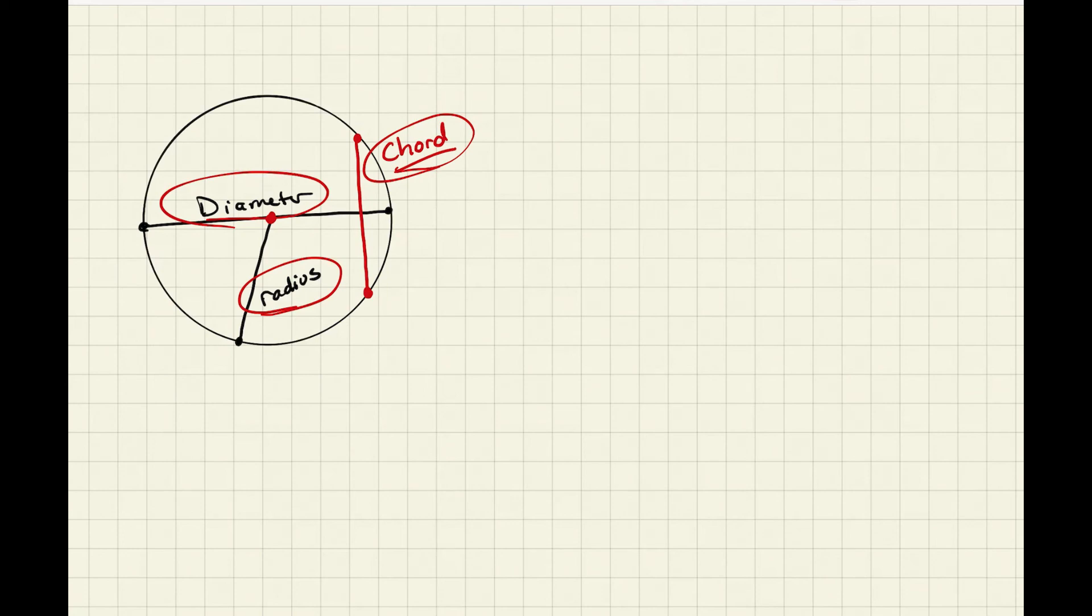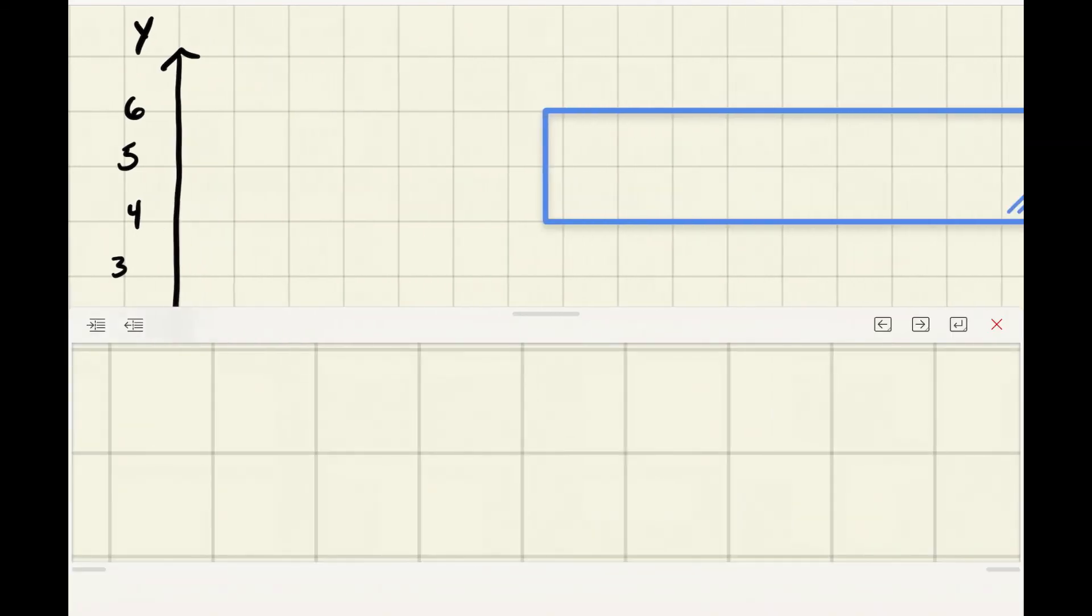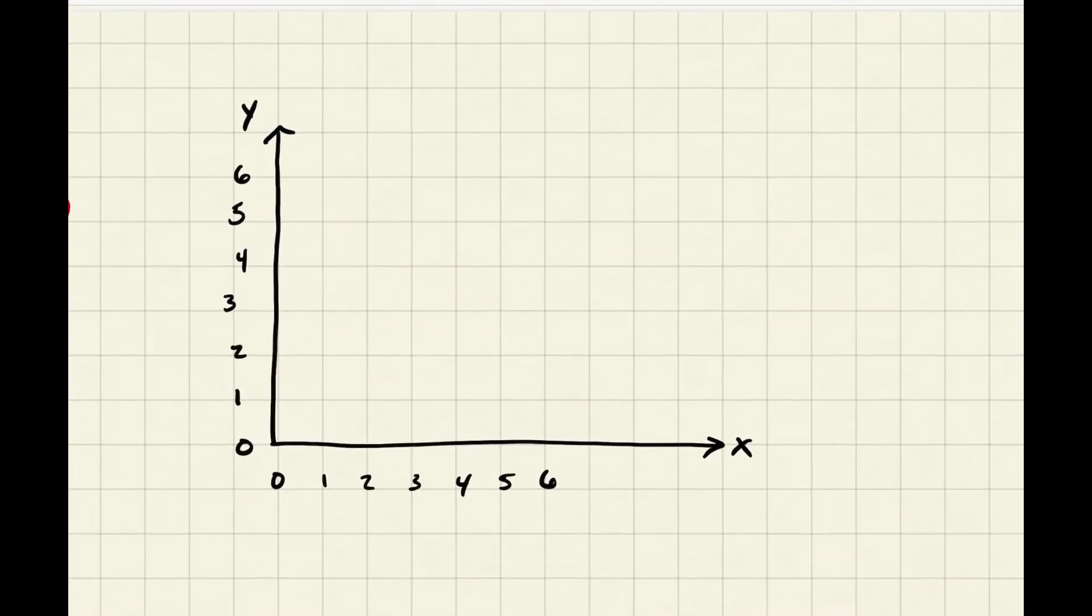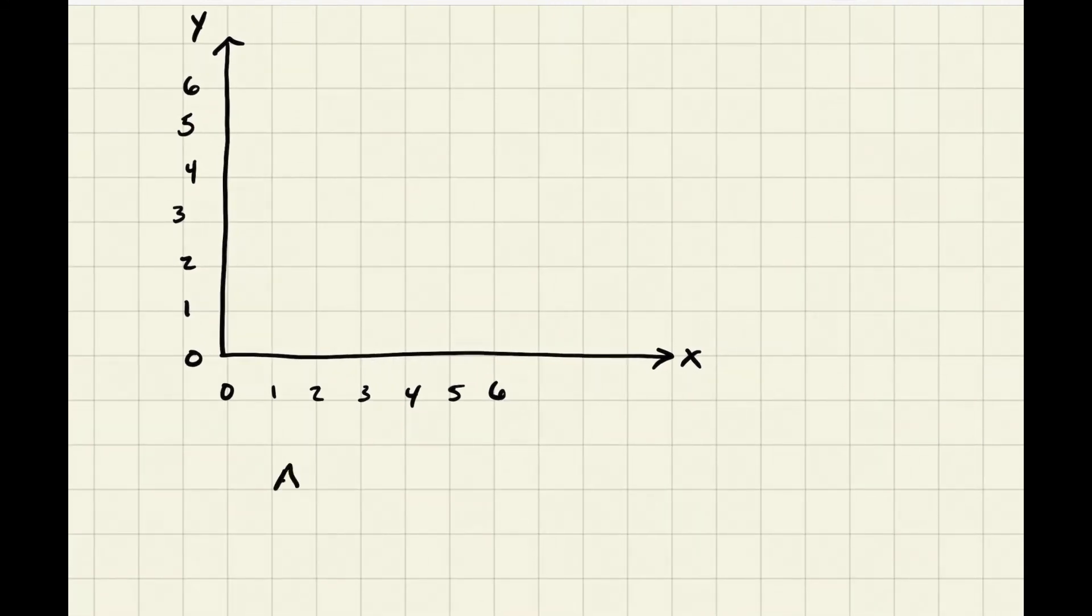And then I also want you to be able to graph triangles and quadrilaterals. And so that's not as hard as you might think it is. If I were to draw my graph here, I have x and y, 0, 1, 2, 3, 4, 5, 6, 0, 1, 2, 3, 4, 5, 6. I may say I want you to graph this triangle.